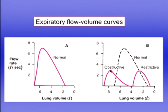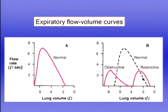The patient with obstructive disease began and ended expiration at a high lung volume, and the curve shows a slightly scooped-out appearance compared with normal. The patient with restrictive disease began and ended expiration at very low lung volumes, and remarkably, the flow rate during most of expiration actually exceeded that of the normal subject at the same lung volume.